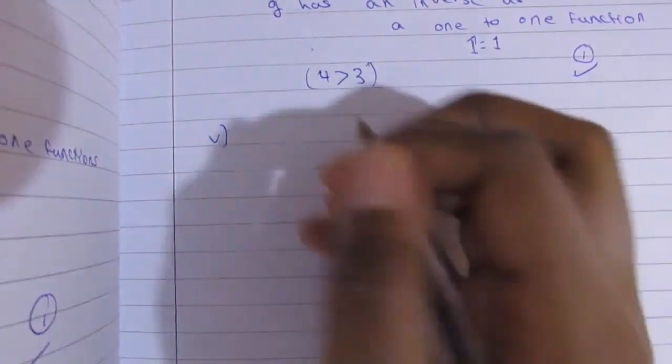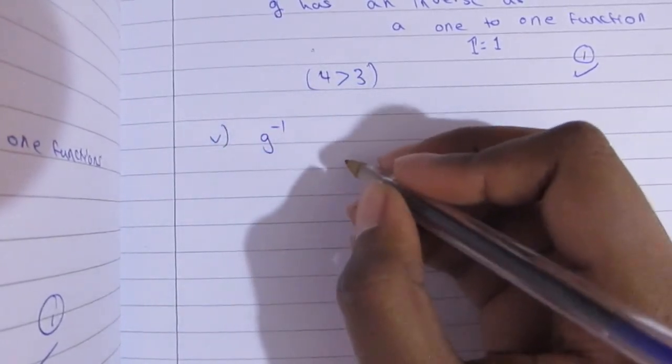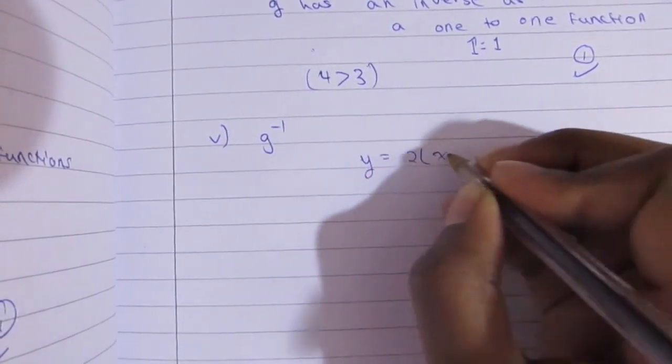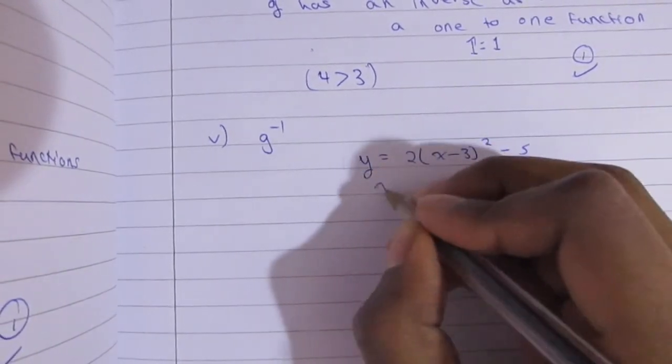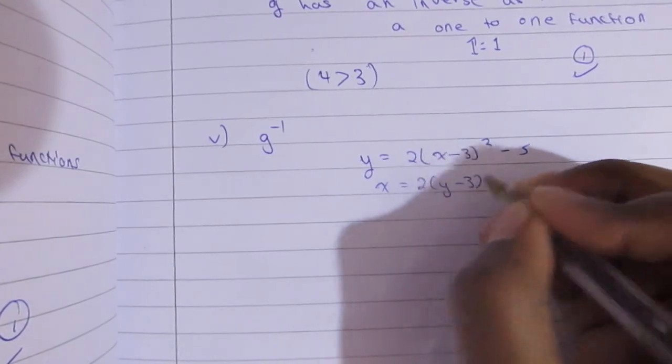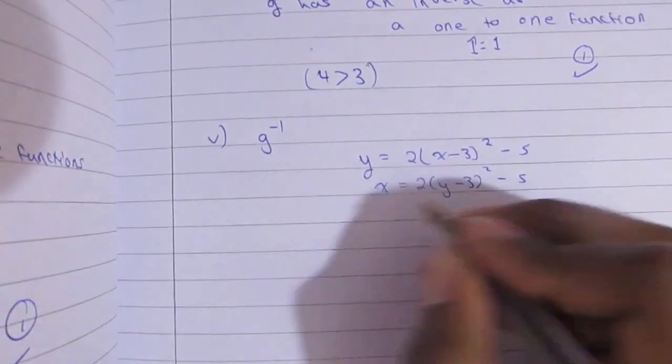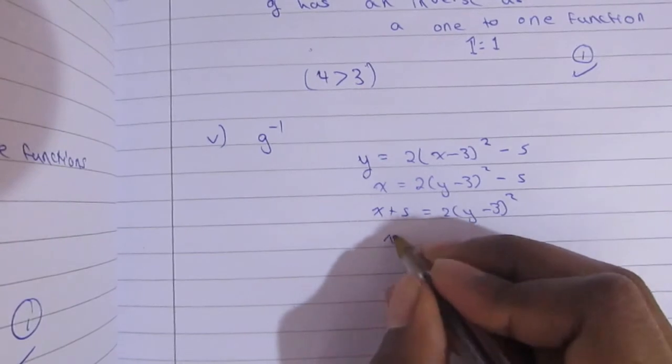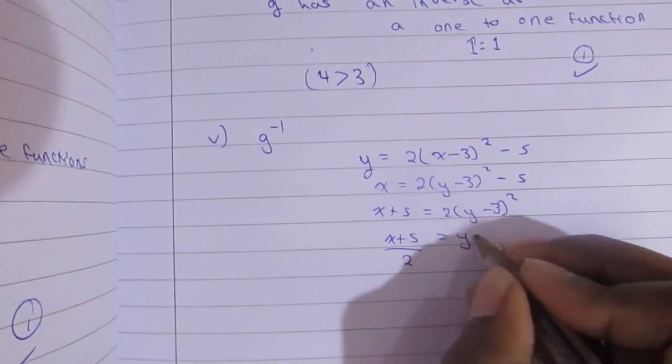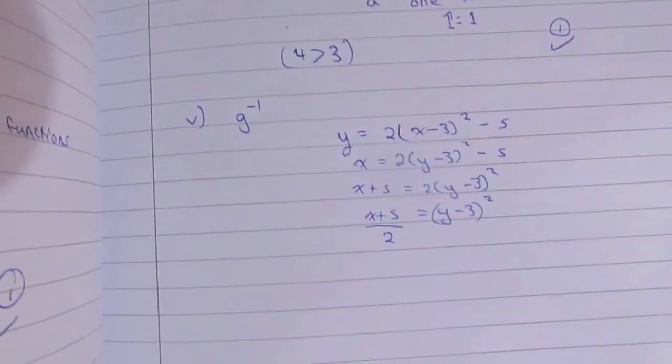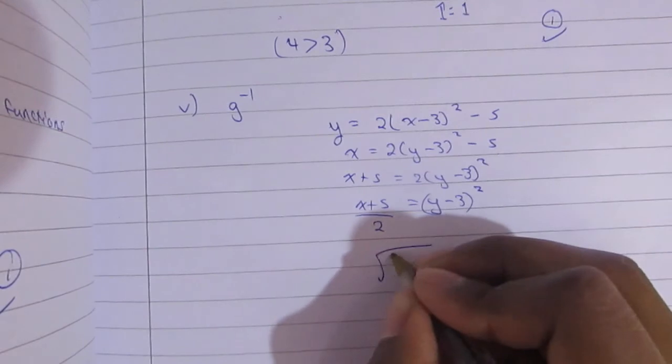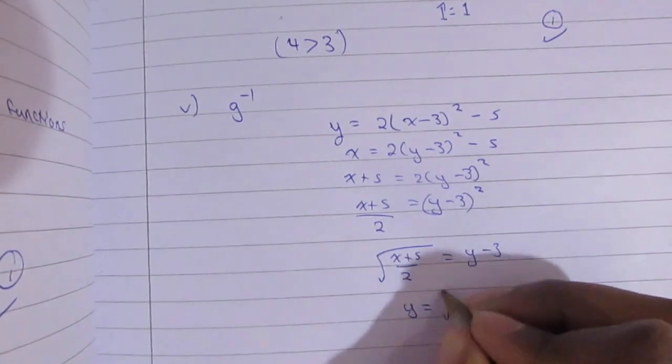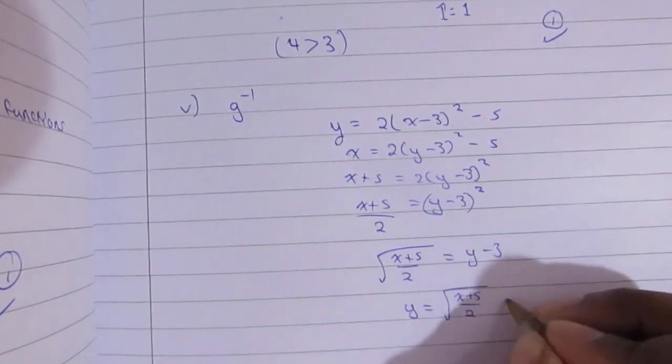So then part V, we have to find the inverse right now. And all you're going to do is we're going to use the completed square form because it's a lot easier. And we're going to switch x and y, and then we're going to try to make y the subject of the formula again. So y equals 2(x minus 3) squared minus 5. Now switch it around: x equals 2(y minus 3) squared minus 5. We're going to move the negative 5 to the other side, becomes x plus 5. Then we're going to divide that by 2. So then (x plus 5) over 2 equals (y minus 3) squared. And then you're going to move the square to the other side, so it's going to be the square root of (x plus 5) over 2 equals y minus 3. So at the end, y equals the square root of (x plus 5) over 2 plus 3.